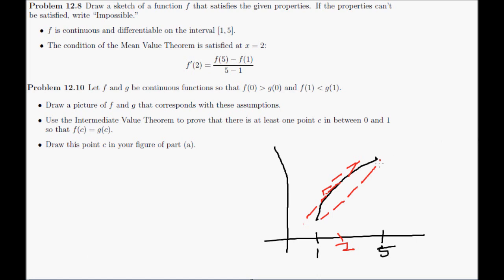So we just need to have that the line here, the slope of the line segment between 1, f of 1, and 5, f of 5, is the same as the slope of the tangent line at 2. So that is how problem 12.8 can be satisfied.